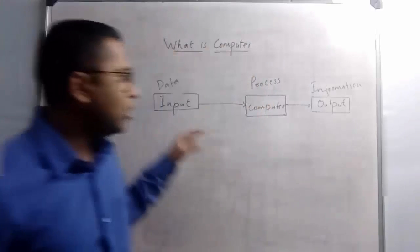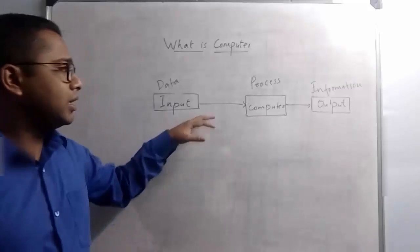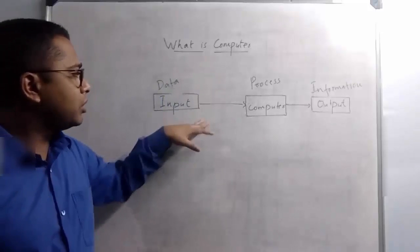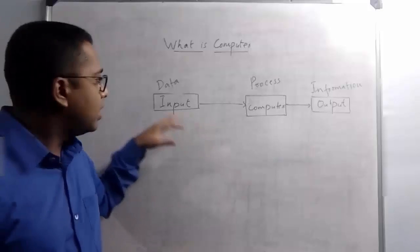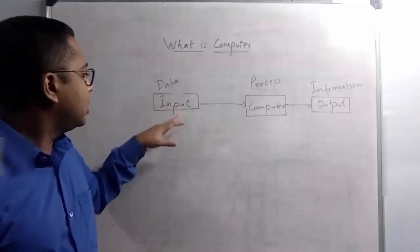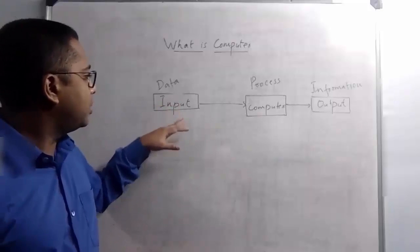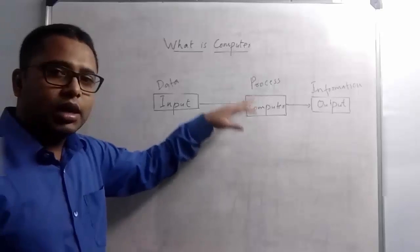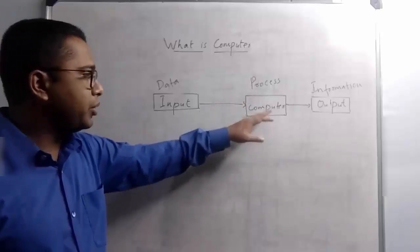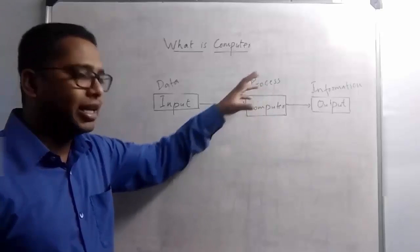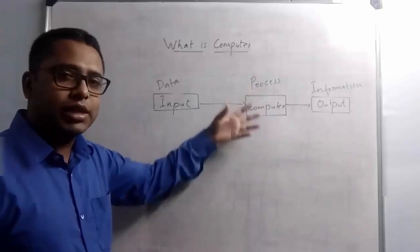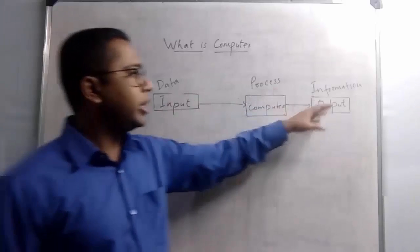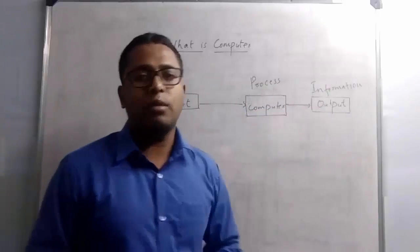Here you can see how it represents the complete process with the help of a diagram. So here you can see input — the user is going to enter the input and then the computer or CPU will take that input, process it, perform some operations on it, and then convert it into some information.